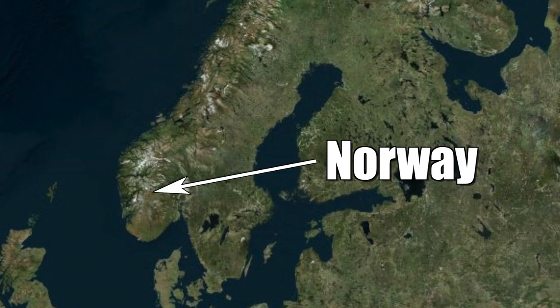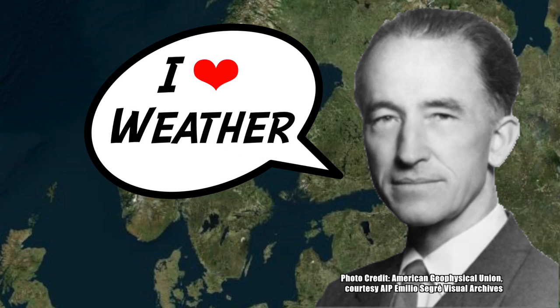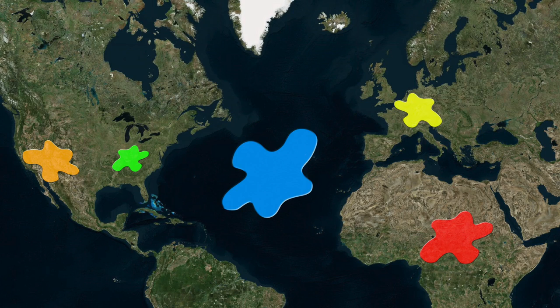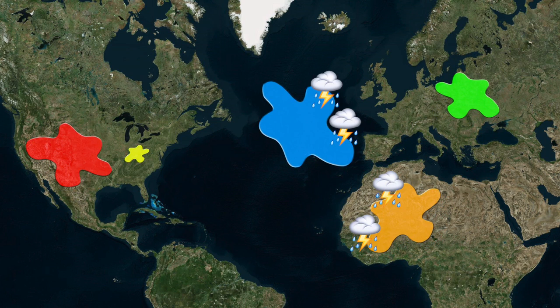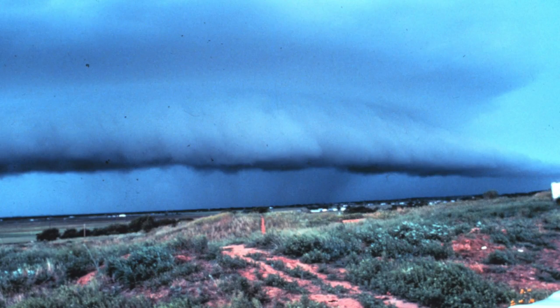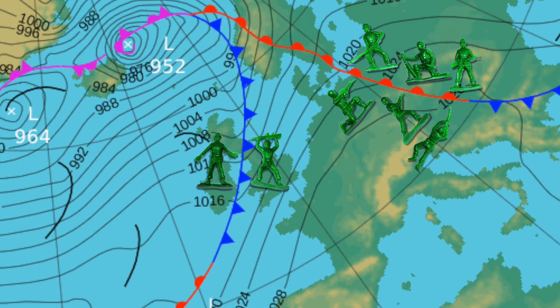It was Norwegian meteorologist Jacob Bjerknes who discovered there were different air masses all around the world, and these air masses were constantly moving and changing. He also noticed the unsettled weather that occurred on the edges of these air masses. He needed a name for these boundaries and since there was a war going on all over Europe, he decided to call them fronts, akin to the fighting along the battle lines.